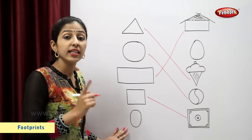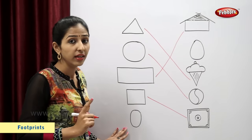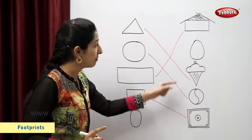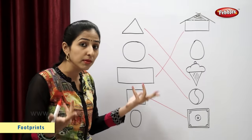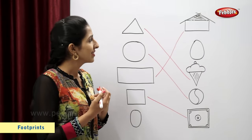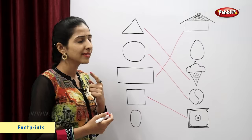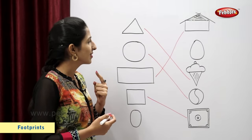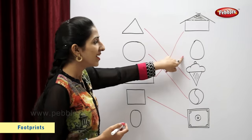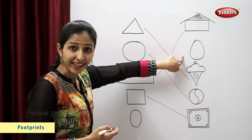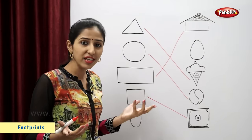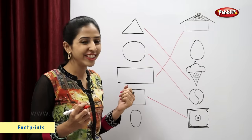This is oval. Now you tell me which is the figure similar to oval? Egg. Egg is similar to oval. So now let's match.